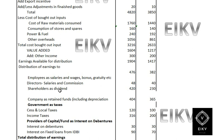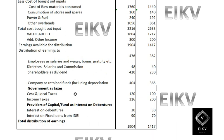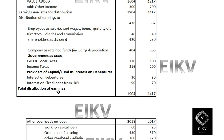The amount distributed to shareholders as proposed dividend is 420 and 230. After that, the company's retained earnings are 404 and 365, which I will explain later using a separate table. The amount paid to the government as cess, local tax, and income tax is 120 and 100, and 316 and 200 respectively.